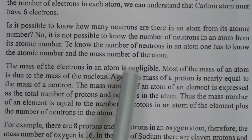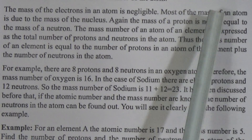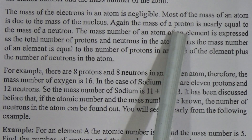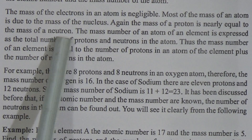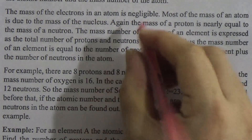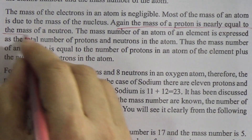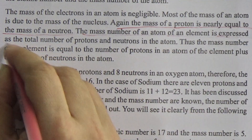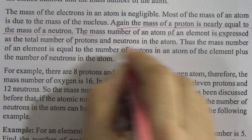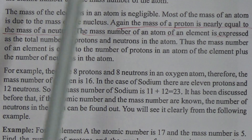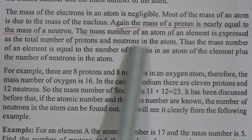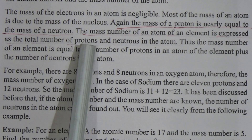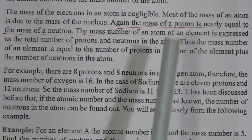The mass of the electron in an atom is negligible. Most of the mass of an atom is due to the mass of the nucleus. The mass of a proton is nearly equal to the mass of a neutron. The mass number of an atom of an element is expressed as the total number of protons and neutrons in an atom.